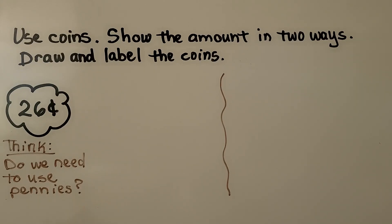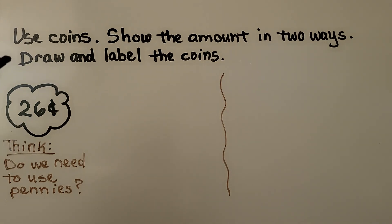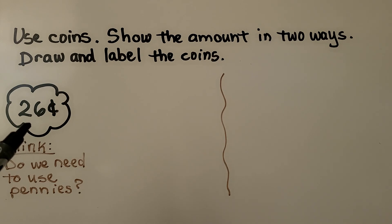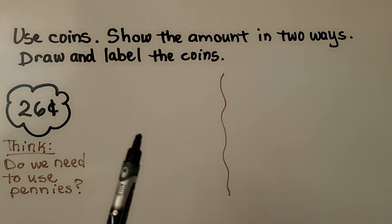Here we can see an amount — 26 cents. It says to use coins and show the amount in two ways: draw and label the coins. So we have to draw coins that will equal 26 cents, and think of two different ways to show it.